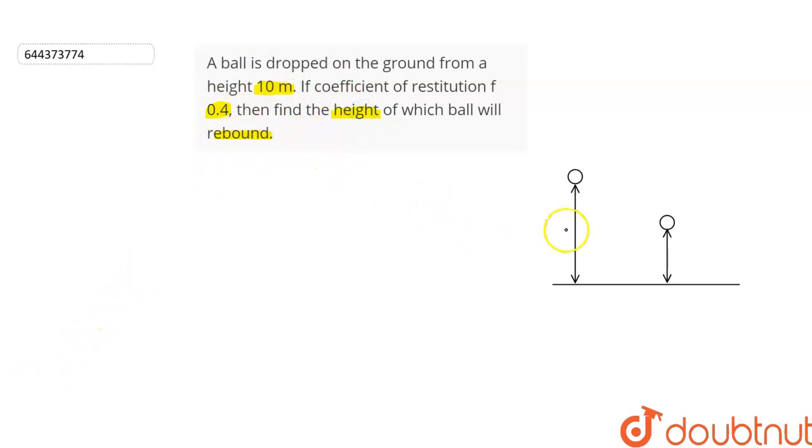To understand this question, let's consider this diagram. This is the initial position of the ball. It is at a height of 10 meters from the ground. So, this height is 10 meters.